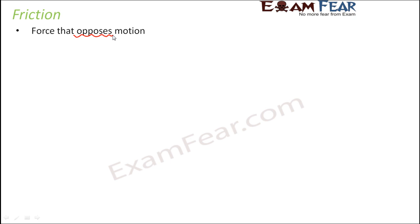Friction always acts in the direction opposite to motion. Motion is nothing but movement. So whenever an object is moving or trying to move, there is always a force that wants the object to stop — and that force is friction. You can say friction is an enemy of motion.